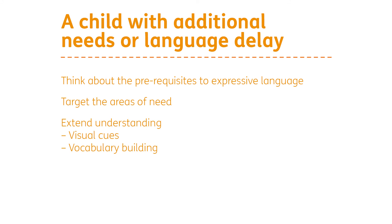If we think about a child with additional needs or a child experiencing a language delay, the most important thing is to think about the prerequisites to expressive language — whether those things are in place and if not, targeting those areas of need. If a child doesn't have an intent to communicate and doesn't think it's useful, we need to think of activities to show them that it is. One of the basic functions of language is to meet a need — so think of activities they really enjoy and see if we can get them to communicate to show they want it again. For example, blowing bubbles and then pausing to see if we can get them to communicate in any way to show they want it to happen again. We also may need to work on attention, building it up from short tasks and seeing if we can extend it.